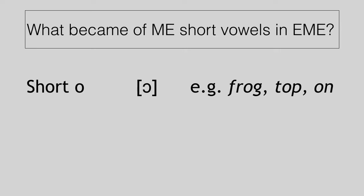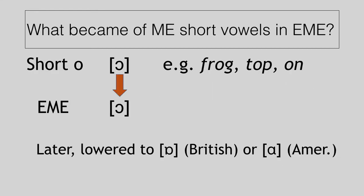Short O in Middle English was typically pronounced as an open O, as an [ɔ]. So frog, and top, and on in Middle English. In Early Modern English, this generally didn't change. So it remained an [ɔ], an open O sound. But later, and we get closer to Present English, these changed.